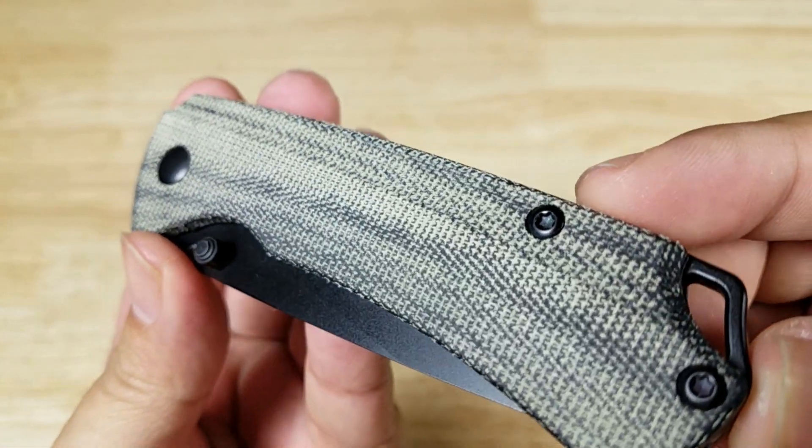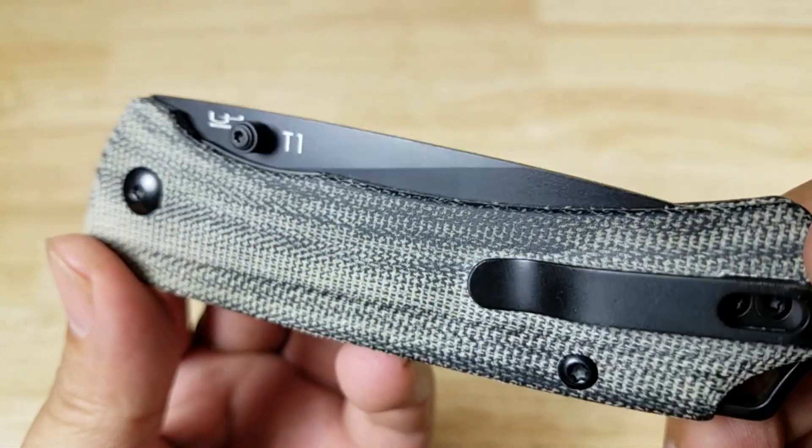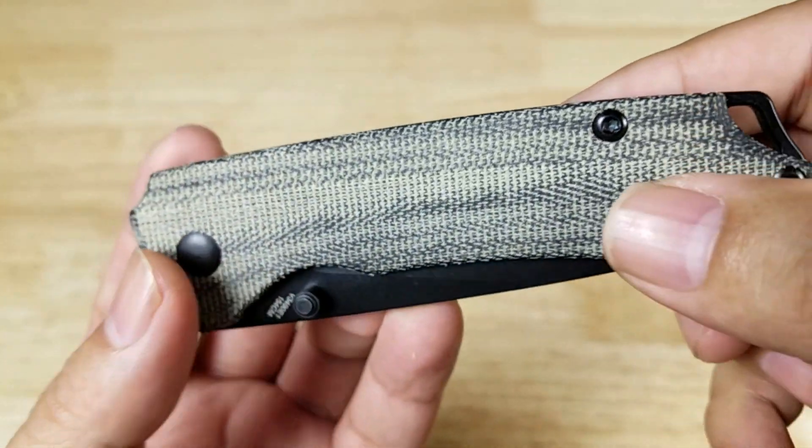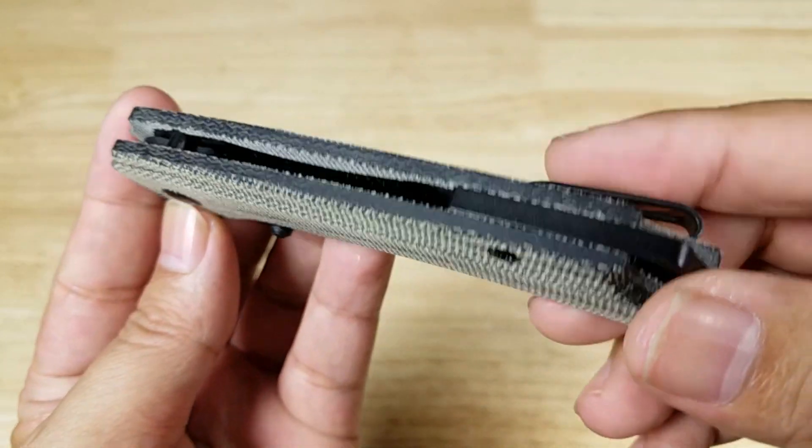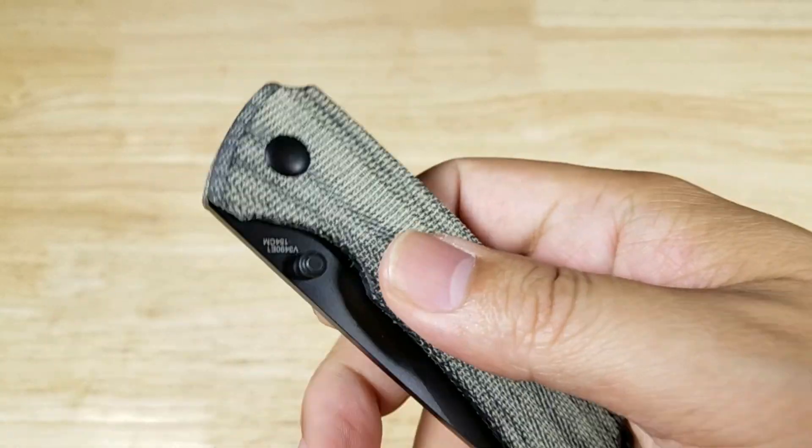Let's have a look at these beautiful black micarta handles. Check out the grain structure on that. You know, micarta is great. It's great in all weather conditions. When your hands are sweaty, or if the knife gets wet, it feels like cloth.